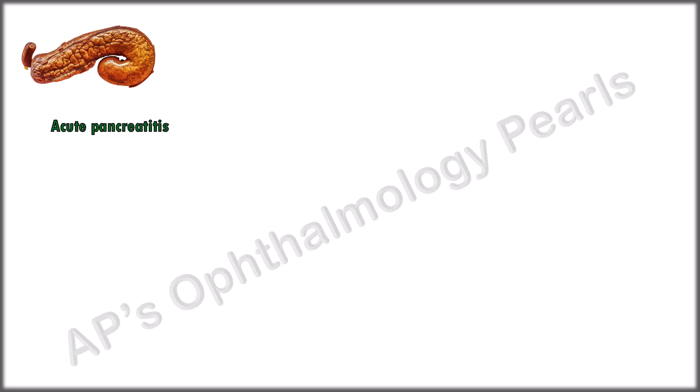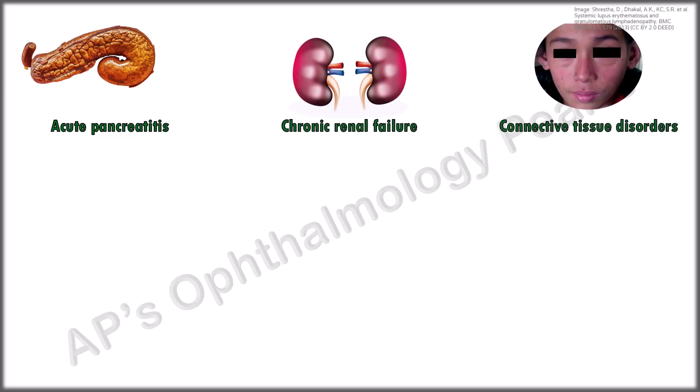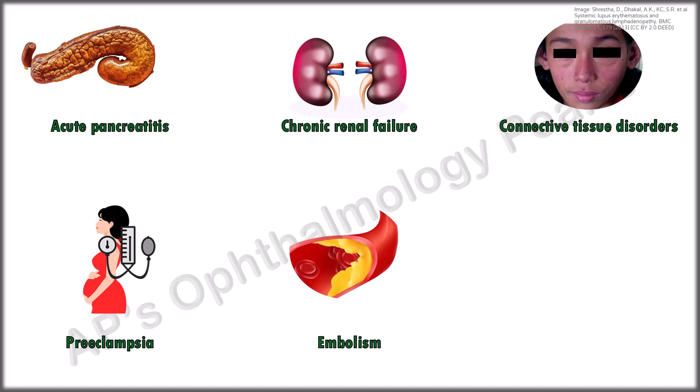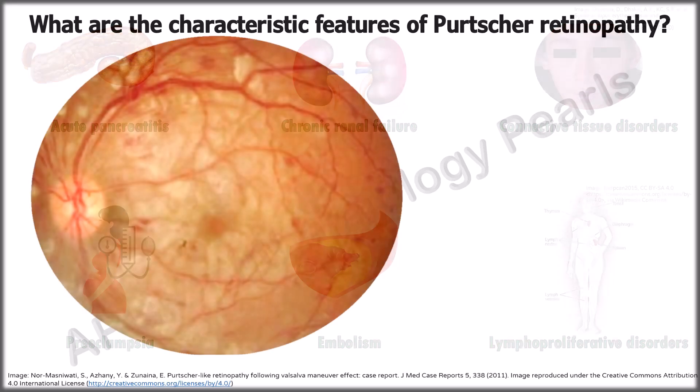Purtscher-like retinopathy can occur in conditions such as acute pancreatitis, chronic renal failure, connective tissue disorders such as systemic lupus erythematosus, scleroderma and dermatomyositis, preeclampsia, fat, air or amniotic fluid embolism, and lymphoproliferative disorders among others. Acute pancreatitis is the most common non-traumatic cause and its presence is an indicator of multi-organ failure, often associated with a fatal outcome.